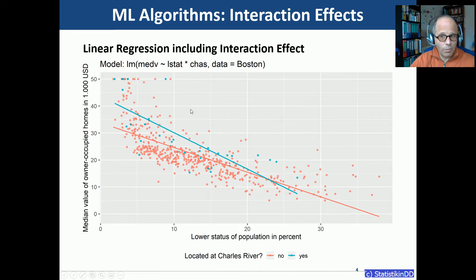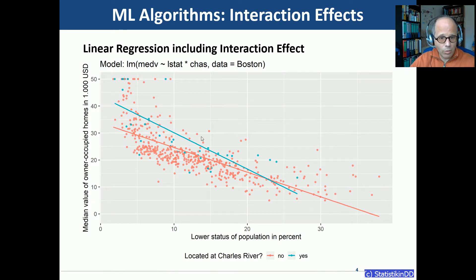An interaction effect is appropriate in this data and the first simple linear regression was probably too simple to capture it. It is possible to include interaction effects in linear models but we have to explicitly state that we want them — they are not automatically modeled.